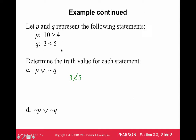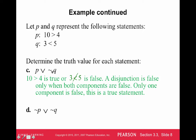Now let's look at disjunctions using the same P and Q statements. For P ∨ ¬Q: you need either of these statements to be true. P is true, and ¬Q is false because Q is true. So we have true ∨ false. That makes it true — since 10 is greater than 4 (P is true), it doesn't matter that ¬Q is false. Only one component needs to be true, therefore this is a true statement.